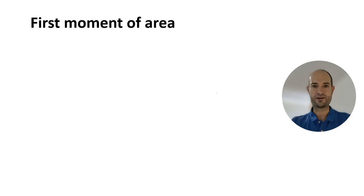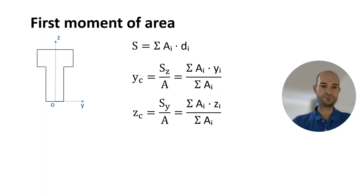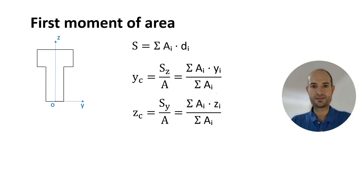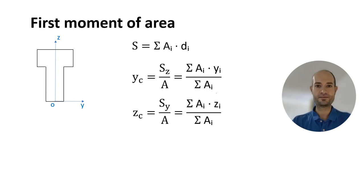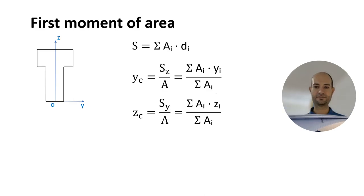We discussed the first moment of area. It's basically an area times a distance, and we use it to calculate the centroid or center of gravity of complex areas. For example, if we have a T-shape, we calculate the centroid according to a point of reference — in this case, the origin. The centroid is the point of equilibrium or center of gravity of a shape. So if I have this notebook and I put my finger right in the center, it stays in equilibrium. That's the centroid.